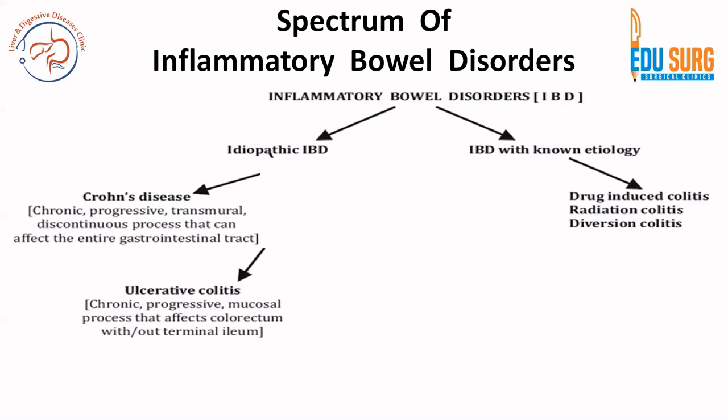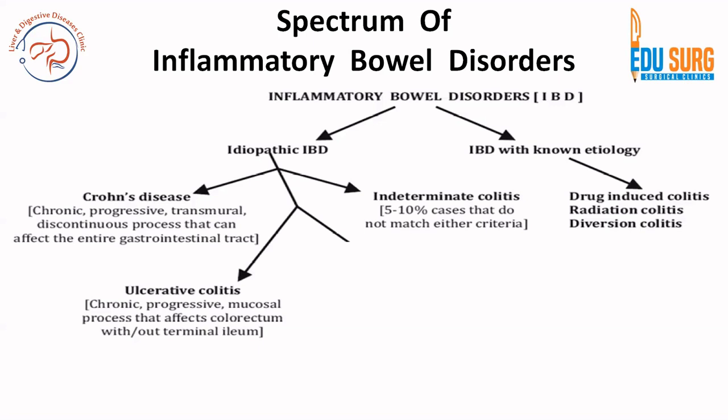On the other hand, ulcerative colitis is also an idiopathic inflammatory bowel disorder — chronic and progressive — but with key differences. It is a mucosal process, not a transmural discontinuous one. Ulcerative colitis is a mucosal, continuous process that affects the colorectum, with or without terminal ileum involvement, which is classically known as backwash ileitis. These are the two most common idiopathic IBDs.